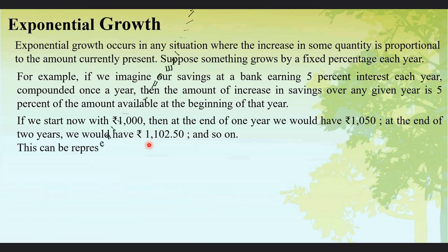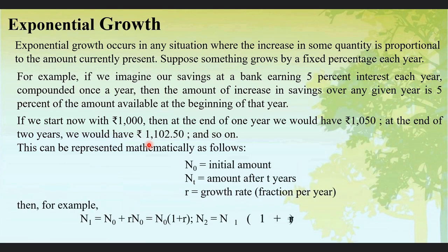So this can be represented mathematically. If N0 is the initial amount and Nt is the amount after certain years t and R is the growth rate, in this case 5%, then after the first year, at the end of the first year that is N1, the amount will be N0, that is the initial amount, plus the growth rate times the initial amount. So if N0 is 1000 and R is 0.05 times 1000, that is 50, so it becomes 1050. If I factor out N0, it will be N0 times (1 plus R).